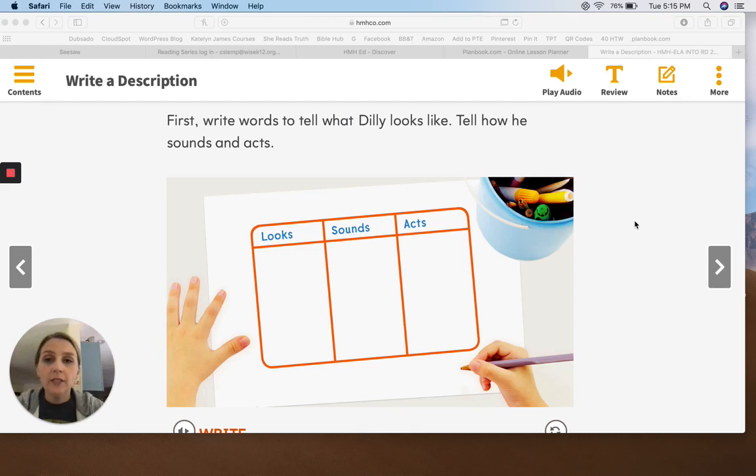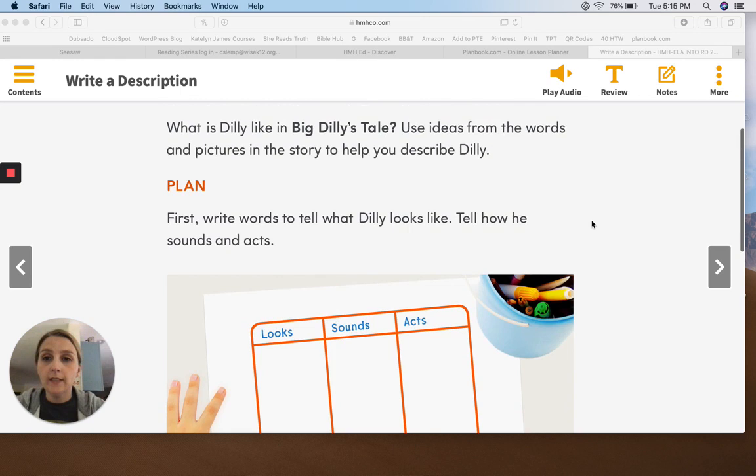Guys, for Writing Station today, you're going to turn to page 80. That's eight zero in your reading book. Your page will look something like what you see on the screen. Go ahead and pause until everybody gets there.